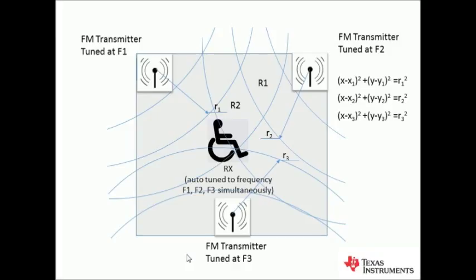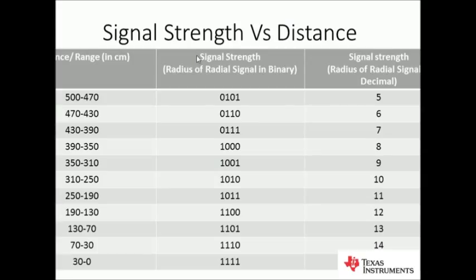This system can be explained with a simple mathematical model. Here, three different FM bugs tuned at three different frequencies are placed at the vertices of an equilateral triangle in a room and there is an FM demodulation and signal strength detector circuit on the wheelchair. The three different FM bugs will emit different frequencies and the power detected by the receiver circuit on the wheelchair is a function of the distance of the FM bug from the wheelchair. It is a signal strength versus distance graph.